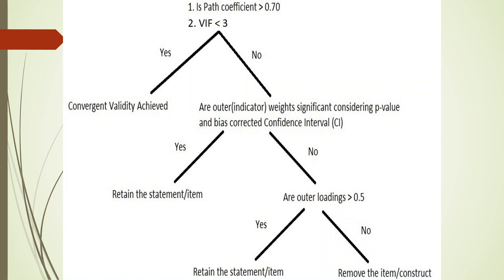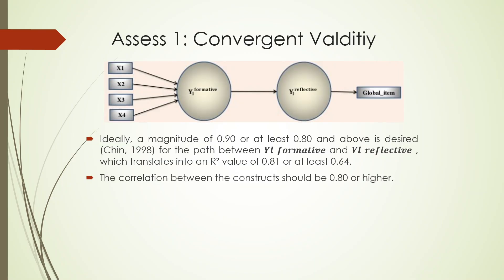To retain the statements, there are two assessments to carry out. The first assessment: ideally a magnitude of 0.9, or at least 0.80 and above, is desired for the path coefficient from Y1 to Y1 for convergent validity to be achieved. We cannot use the traditional path of AVE, CR, or Cronbach's alpha because the correlation is low. Therefore we check convergent validity in formative construct this way. The second assessment comes from collinearity issues — there should be very low correlation among the constructs. VIF (Variance Inflation Factor) should be less than 3; tolerance is the inverse of VIF.